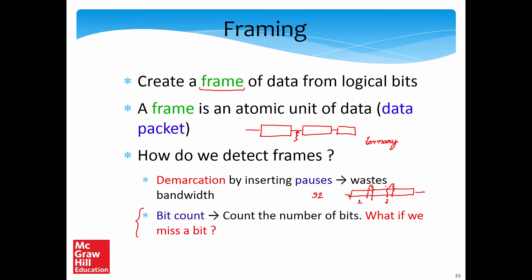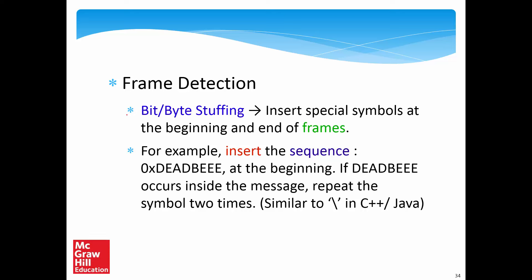Instead of that, inserting pauses is a better idea, but again this requires ternary signaling. What is done is slightly different — it is called bit or byte stuffing, which means that at the beginning and end of a frame, we add some special symbols. Once the hardware sees that this sequence of bits is coming by, it knows that a frame has ended, and once it sees the other sequence, it knows that the frame is beginning. The sequences have to be designed so that even if you miss a bit, you will still be able to detect frame boundaries with a fairly high probability.